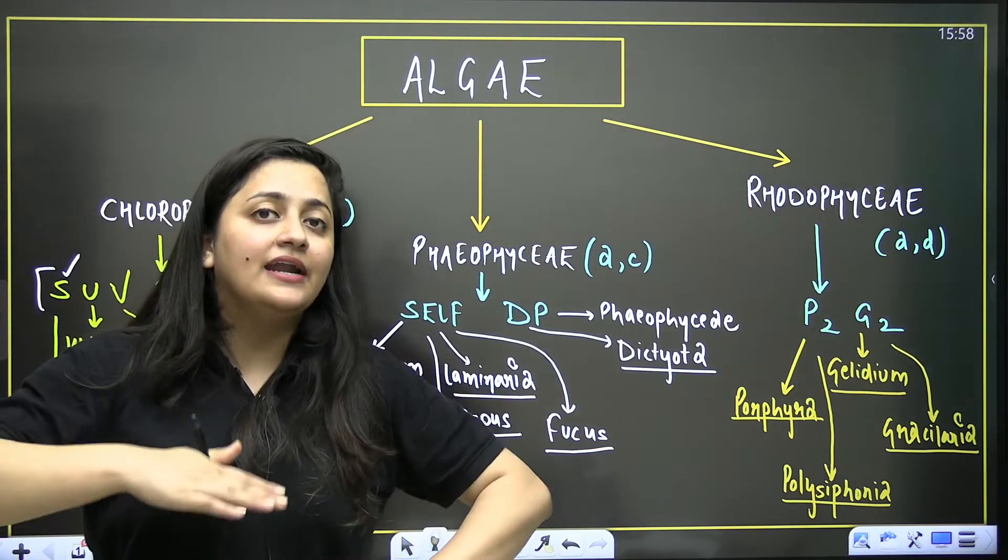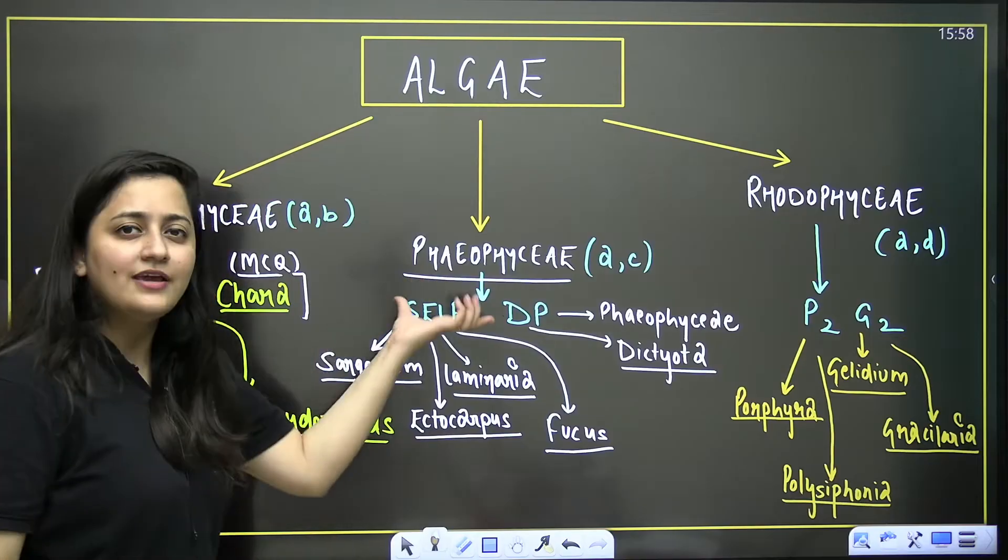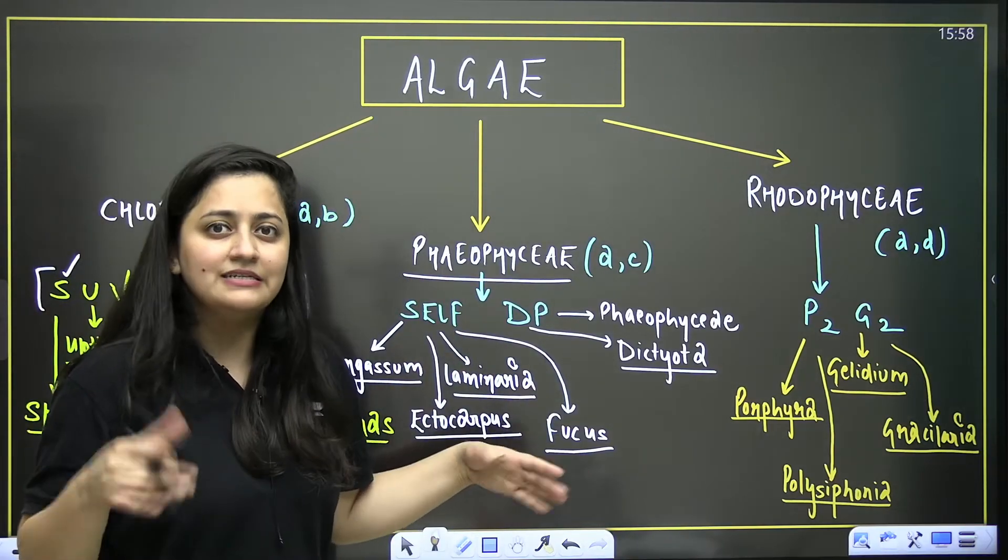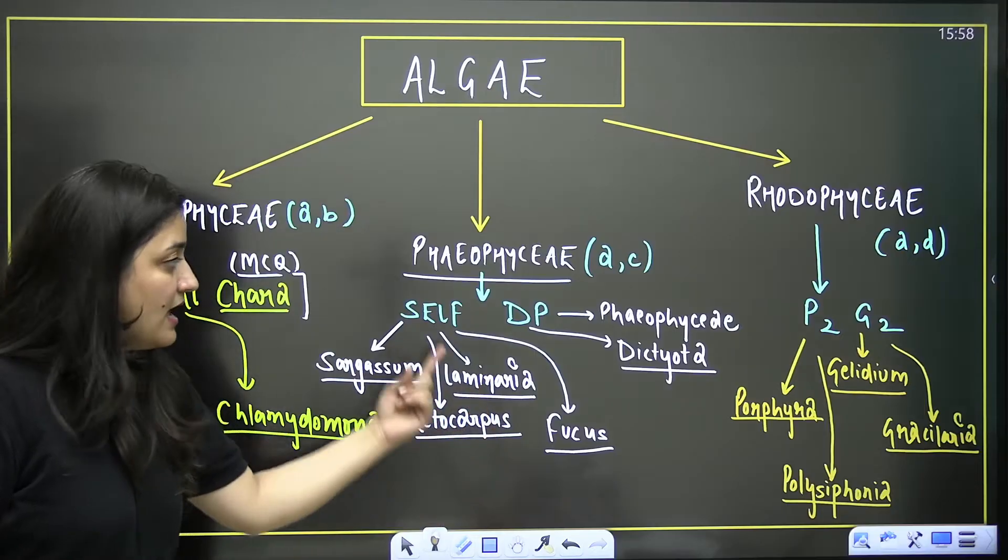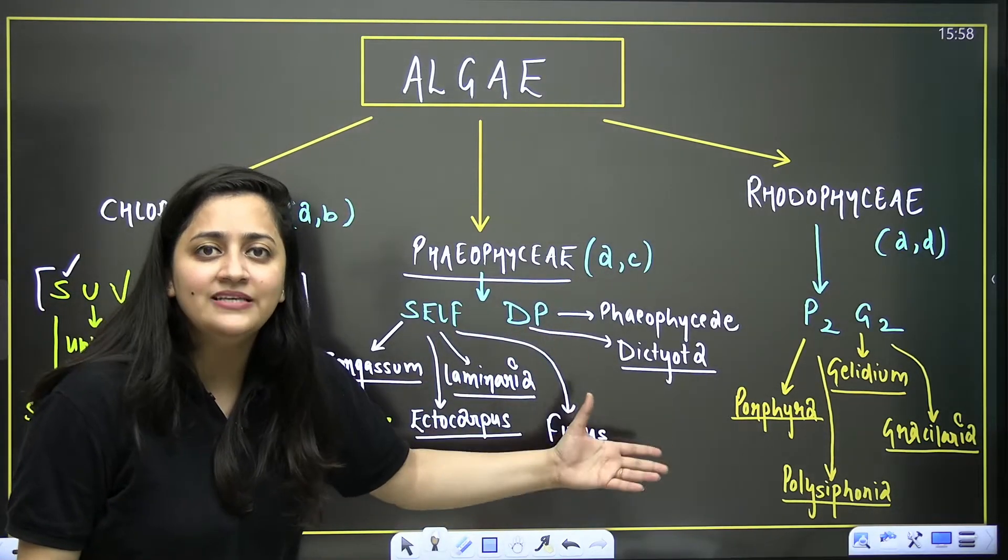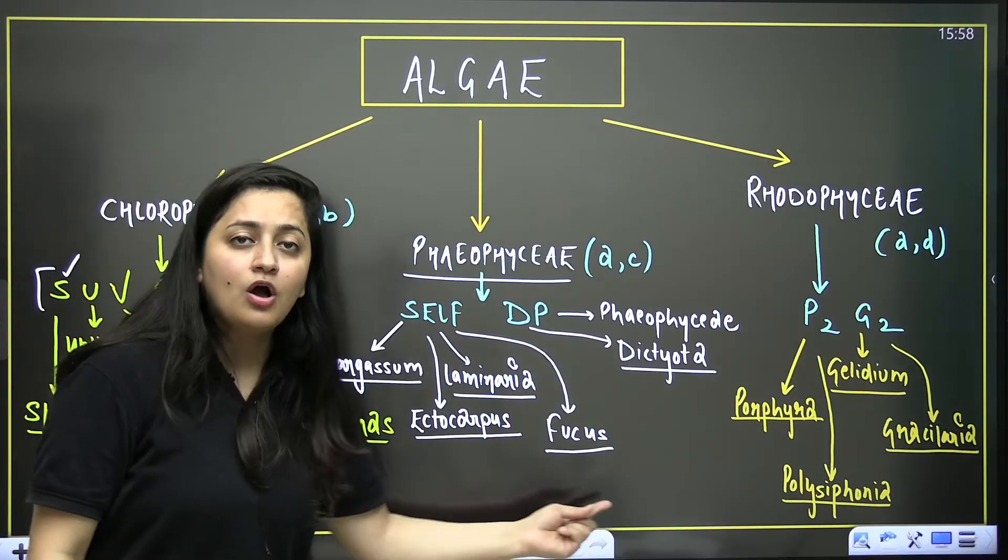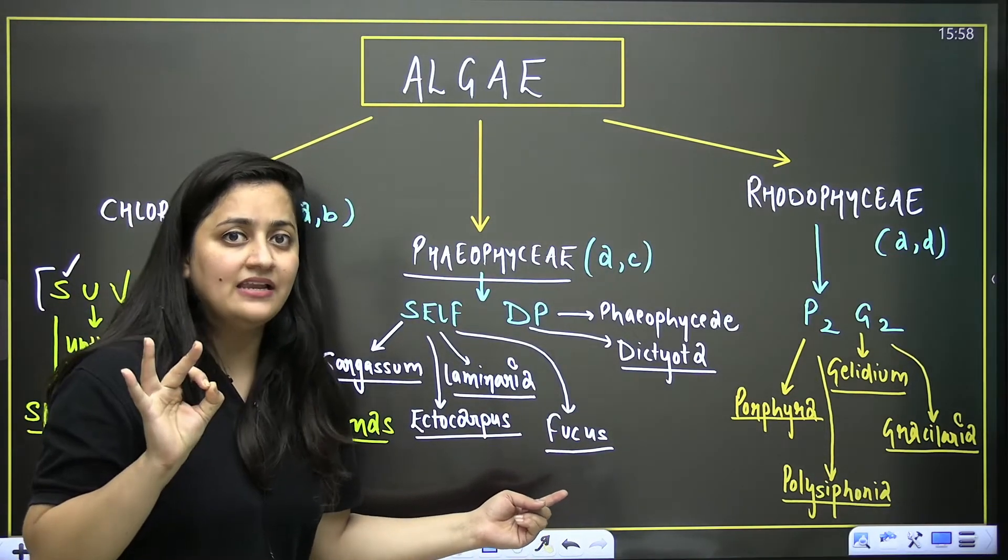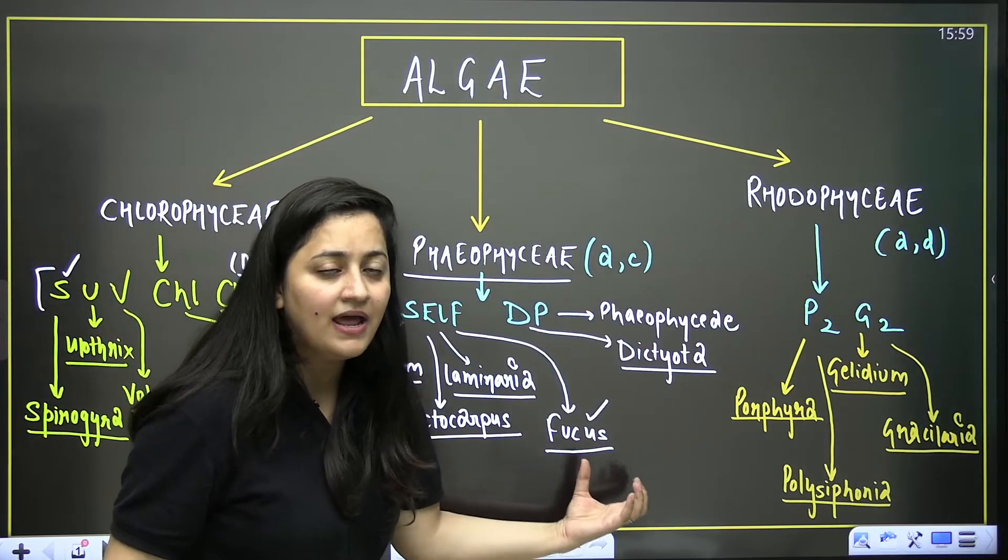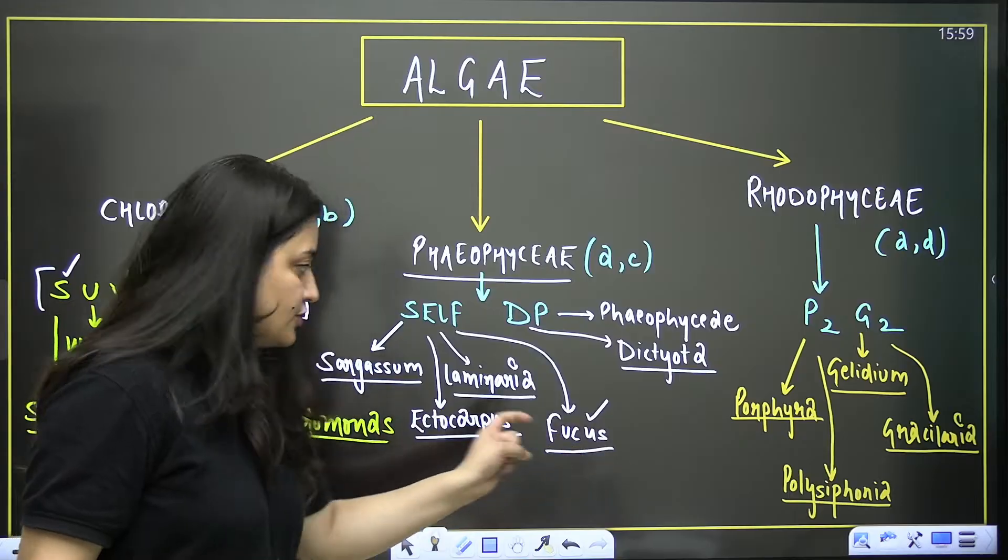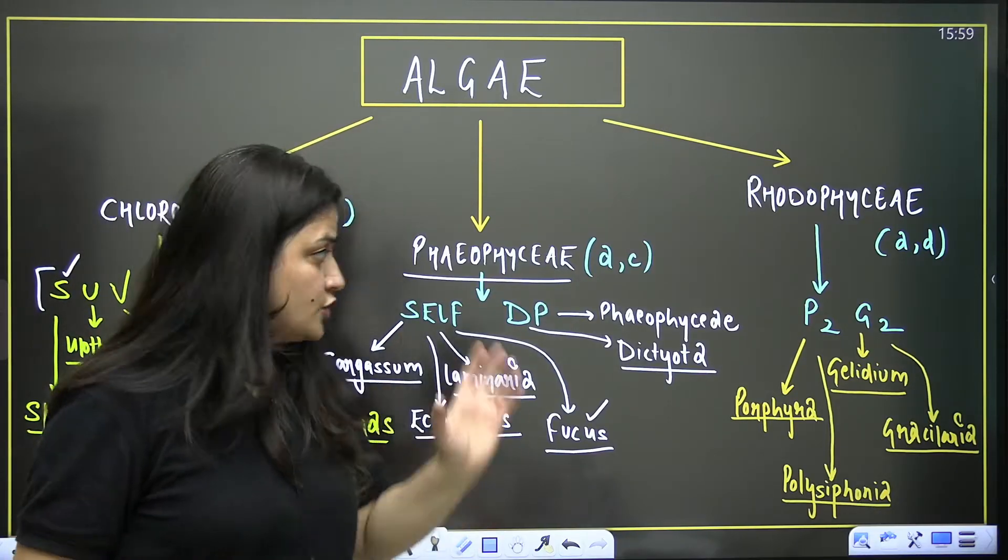For Phaeophyceae, brown algae, the trick is very simple: self DP (display picture). S stands for Sargassum, E for Ectocarpus, L for Laminaria, F for Fucus, D for Dictyota and P for Phaeophyceae. When you talk about Fucus, it is a diplontic algae. Generally in algae the life cycle is haplodiplontic, but Fucus, the algae having air bladder, has diplontic life cycle. In the case of Ectocarpus, it is haplodiplontic.